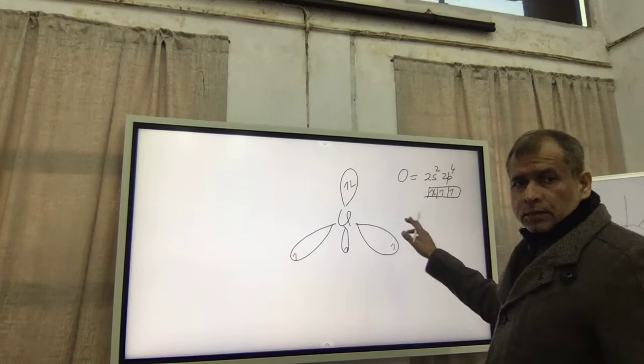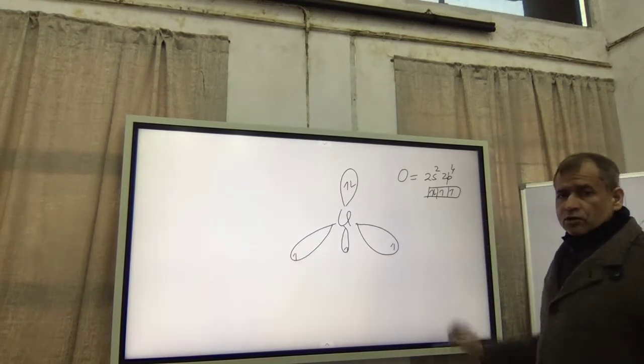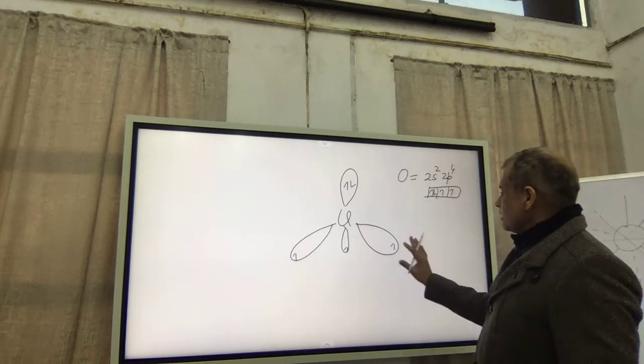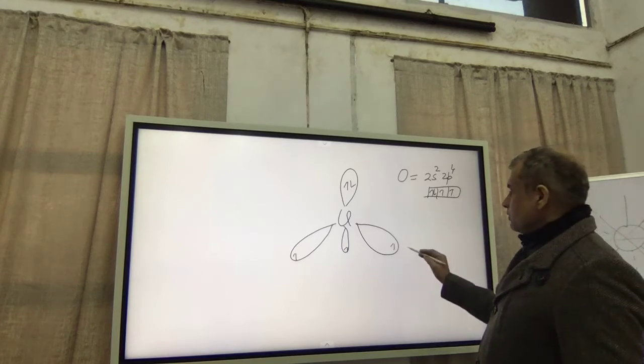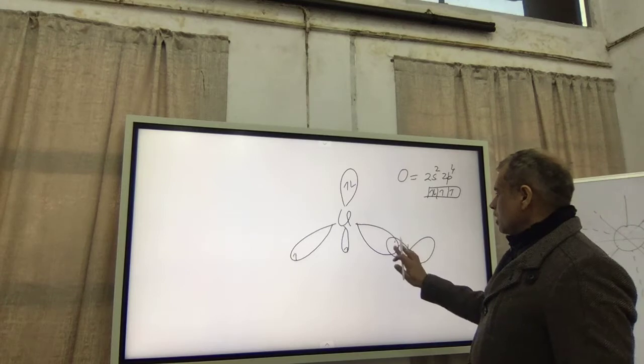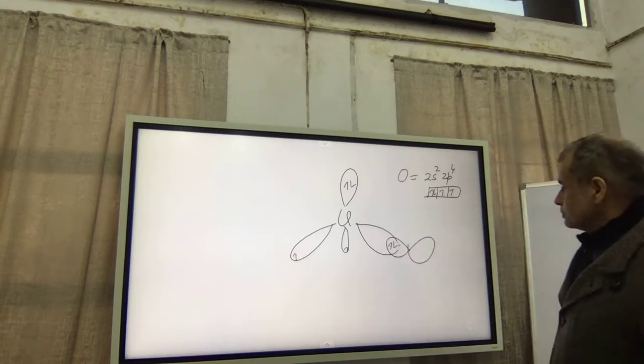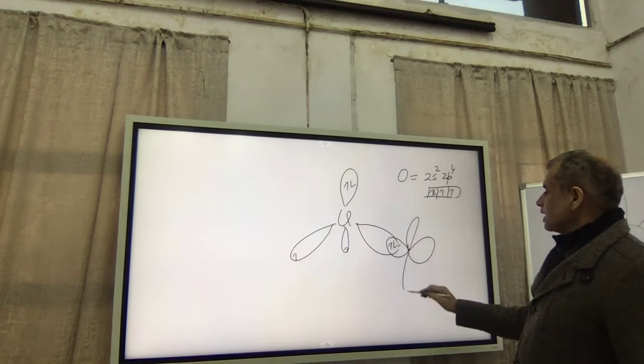So oxygen is this, it has two p-orbitals. So one oxygen will come here and from one of its p-orbital it will make a sigma bond with the hybrid orbital of the central atom like this. And obviously its second p-orbital is lying like this.